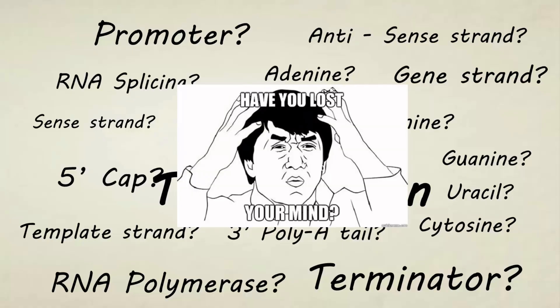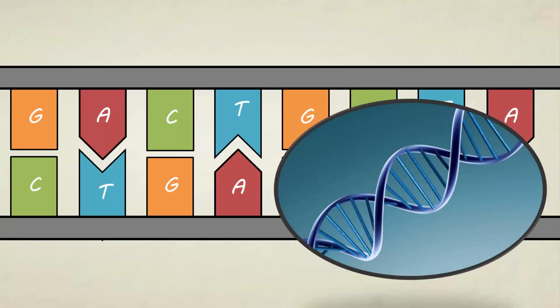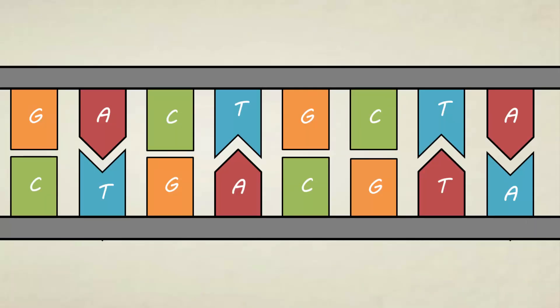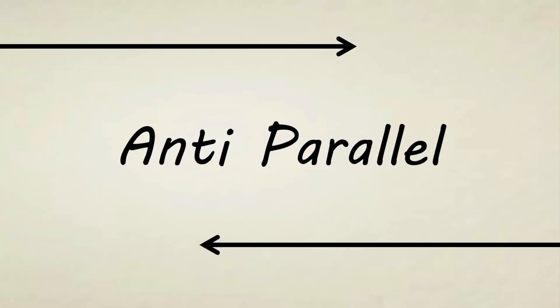Before your mind blows up, let's start with the important things that you need to know about DNA. DNA has a double helix structure, but in this video, I've made it straight so it will be easier for you to understand. The two strands are anti-parallel to each other. Anti-parallel means that it does parallel, but it goes in the opposite direction.